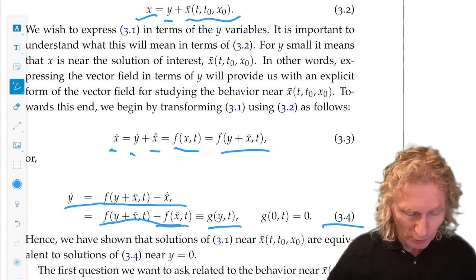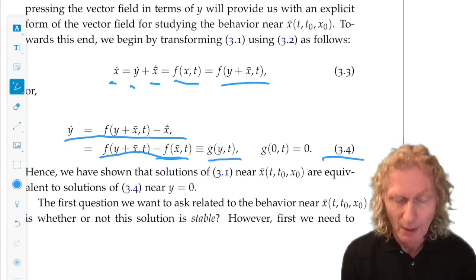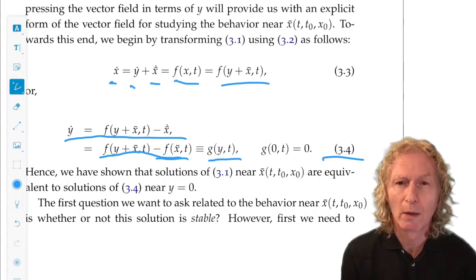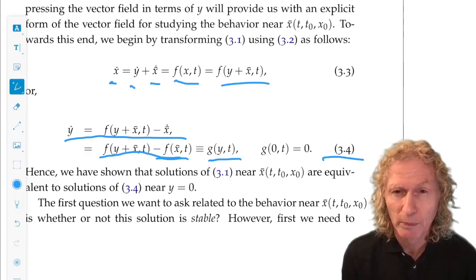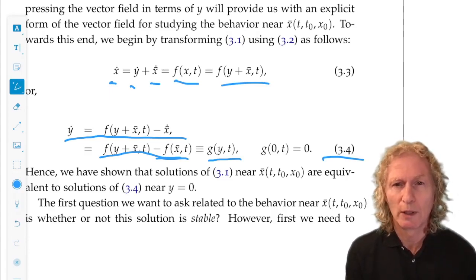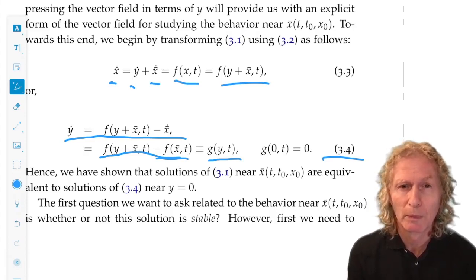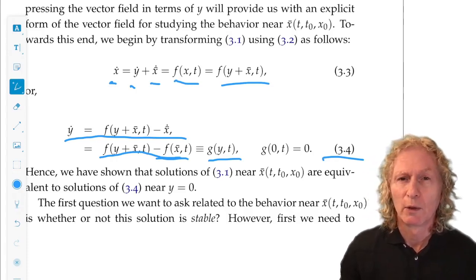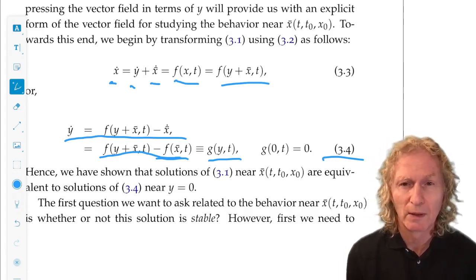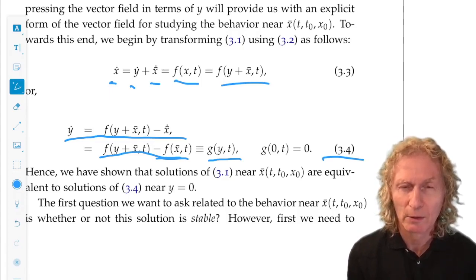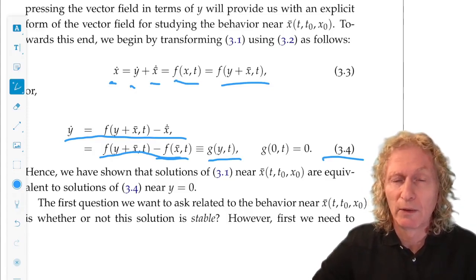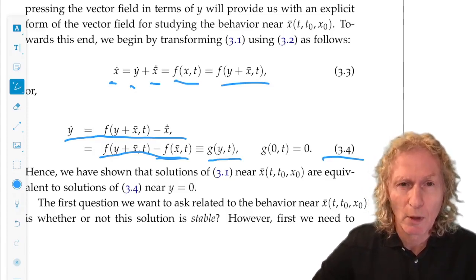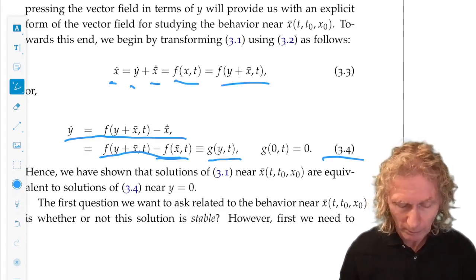So the first question we want to ask about the behavior near x̄ is whether or not x̄(t) is stable. Now stability is a big topic in ODEs and dynamical systems, and it's thrown around a bit haphazardly. So whenever you hear the word stability, you need to understand or ask, stability of what? Right now we're looking at stability of this specific solution, x̄(t, t₀, x₀).